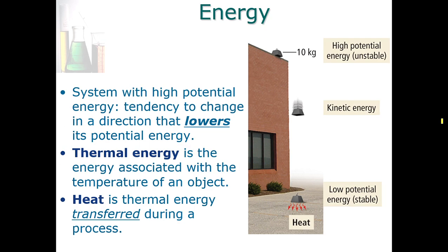As we see here on the picture, a 10 kilogram weight poised here at the edge of the roof is in a high potential energy or unstable state. Its tendency will be to allow gravity to pull it down. When it does, that energy is converted into the energy of motion, which is kinetic energy, until the object hits the pavement below. When it hits the pavement, it will have lower potential energy, it'll be more stable, but at the same time some energy got transferred to the pavement in the form of heat.